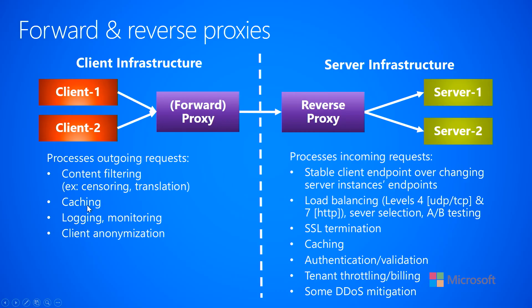Forward proxies can also be used for caching. If many employees at the company are requesting the same information repeatedly, the forward proxy can make a request, cache it, and simply return it for future requests. This way, requests don't have to go out over the internet, which saves the company money by reducing bandwidth usage and also gives employees a better experience because performance is faster when returning that cached information.